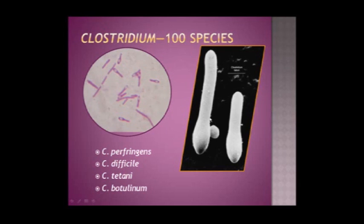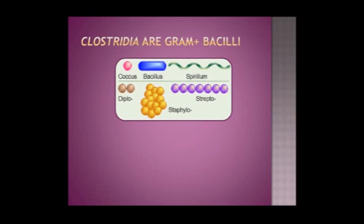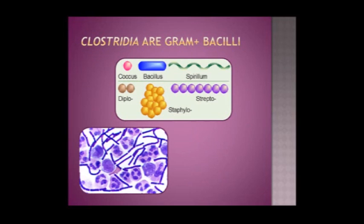This is the Clostridium bacteria up close, and again we can see that bulge at the end, and this represents something. These species are very interesting in that they die in the presence of oxygen, so they're really only going to proliferate in an anaerobic state — we call these anaerobic bacteria, and that's important to remember. All Clostridia are gram-positive bacilli, and bacilli just helps us know what its shape is — it's this rod shape.